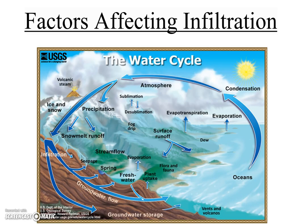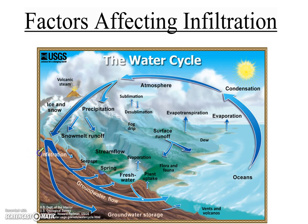Today in this video, we're going to take a quick look at some of the factors that affect infiltration. In class, we looked at the water cycle and how when precipitation falls from the sky, there are mainly two things that can happen to it. Some of the precipitation will seep into the ground — that is called infiltration. Some of it doesn't seep into the ground; instead, it stays on top of the land and runs off the surface, which we call runoff.